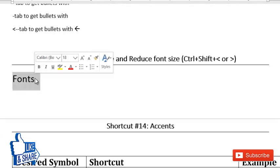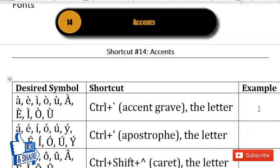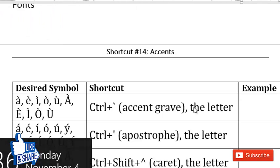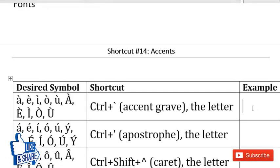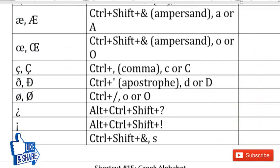The fourteenth shortcut is for typing accents, based on viewer requests. To get a grave accent, press Ctrl and then the apostrophe sign, release, and type the desired letter. This list of accent shortcuts is quite extensive, so a separate video covers how to type different accents in Microsoft Word.